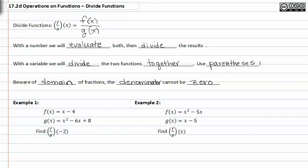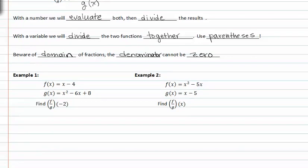In example one, we have f equals x minus four, and g equals x squared minus six x plus eight. Find f over g of negative two. Since this is a variable that is substituted with a number, just like the first example, we'll evaluate the two functions separately and then divide.